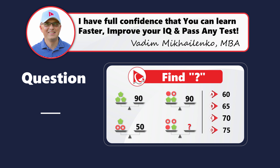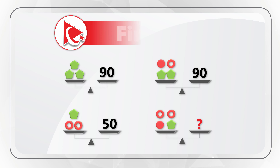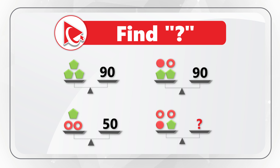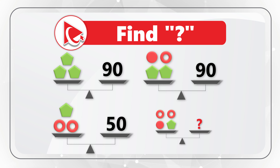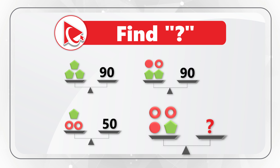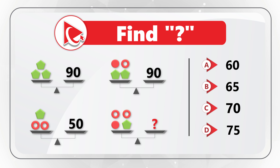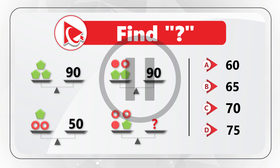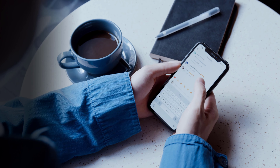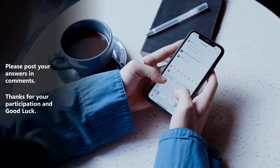Now I have something maybe you were not expecting — a practice question for you. You need to find the missing number. You're presented with four scales. Three scales have items on the left and a number on the right to make them equal. The fourth scale has items on the left and a missing number as a question mark on the right. Select from: A is 60, B is 65, C is 70, D is 75. Pause the video for 10 to 15 seconds to see if you can come up with the solution, then post your answer in comments so I can give you feedback. Thanks for participating and good luck!